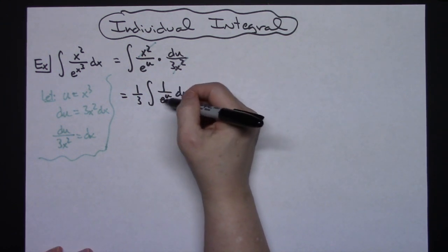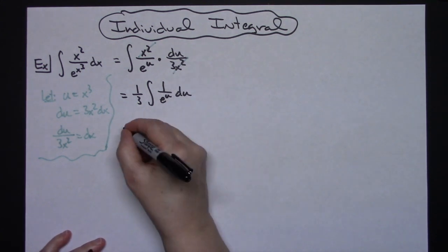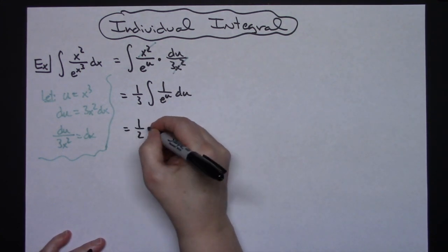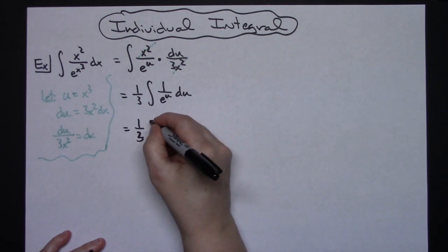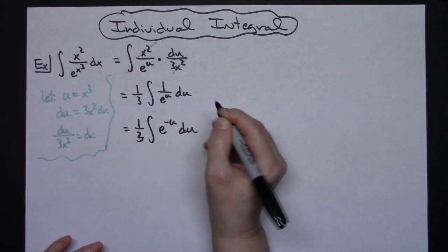We're going to want to move this denominator up and use our laws of exponents. So we will have 1 third integral of e to the negative u du.